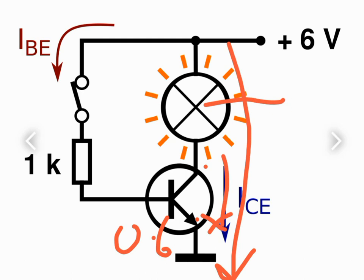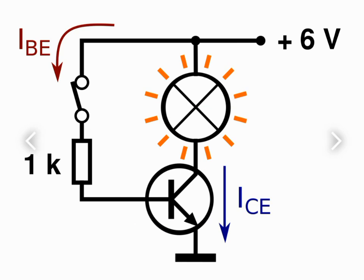Therefore this bulb will glow. So when the switch is closed the bulb is on, when the switch is open the bulb is off. That's how a transistor is working as a switch.